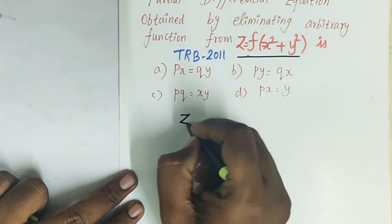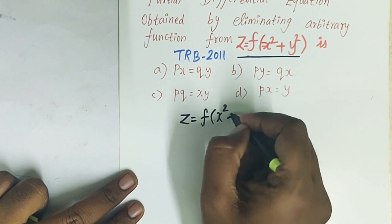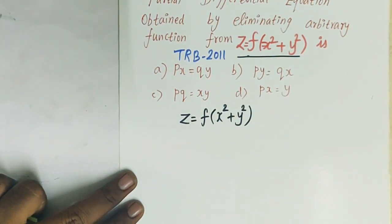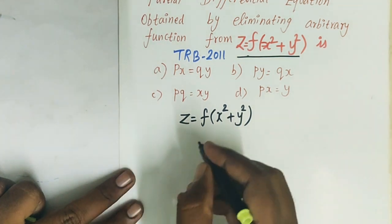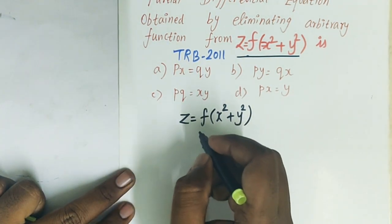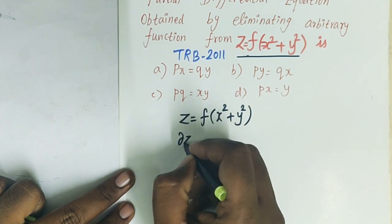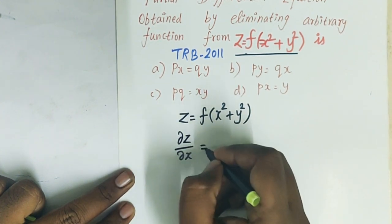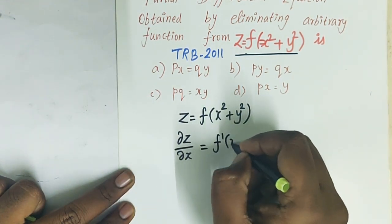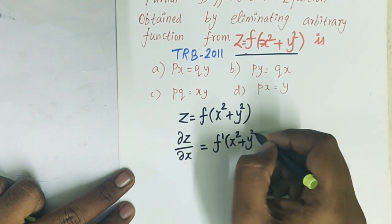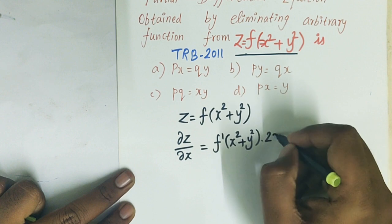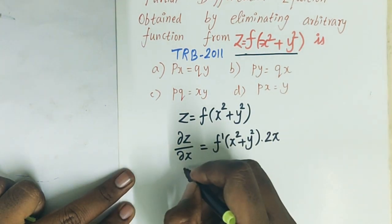So z equal to f of x square plus y square. We will eliminate f by first differentiating the function. We'll differentiate z partially with respect to x and then by y. First we differentiate with respect to x.